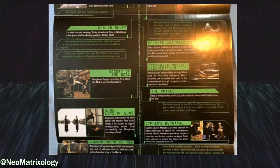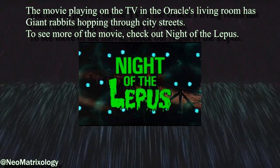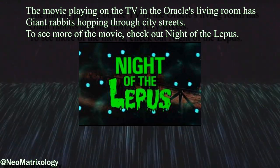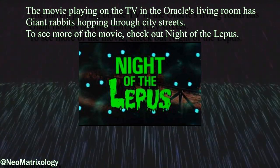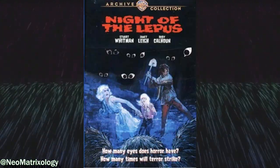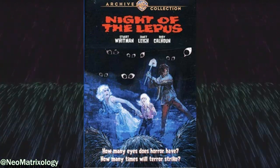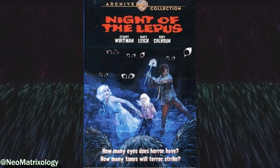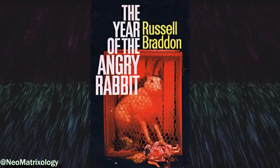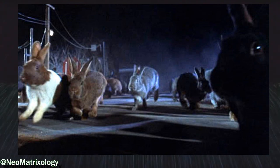On the Enter the Matrix poster, there is also another artistic note that says the movie playing on the TV in the Oracle's living room has giant rabbits hopping through city streets. To see more of the movie, check out Night of the Lepus. Heads up — Night of the Lepus, also known as Rabbits, is a 70s sci-fi horror movie about an infestation of mutated rabbits based on the 1964 science fiction novel The Year of the Angry Rabbit. This is a film that gained cult status due to its ridiculously low budget quality.